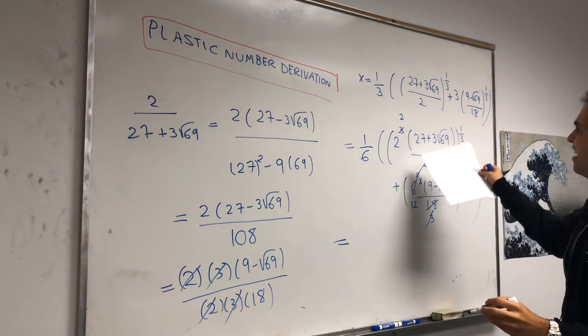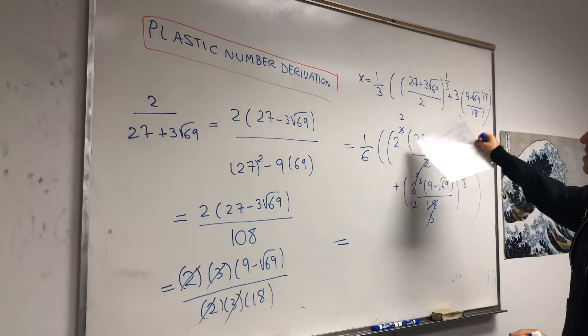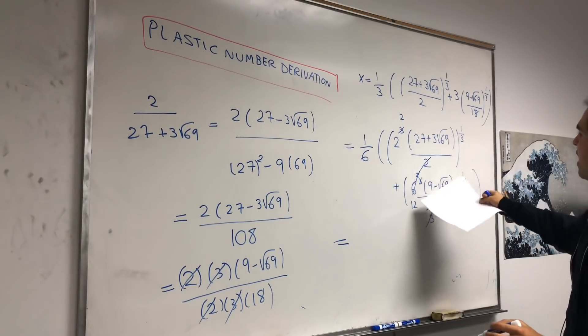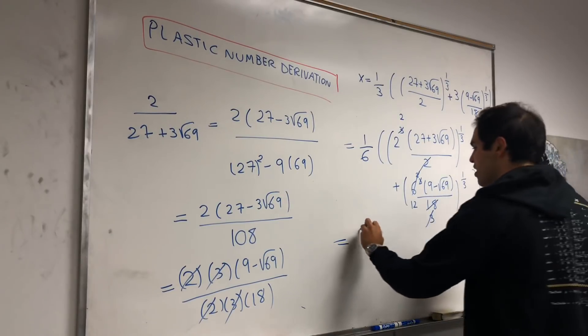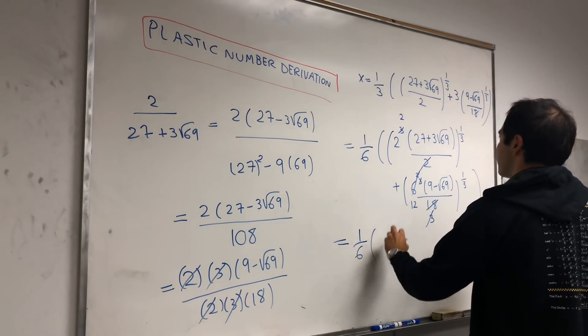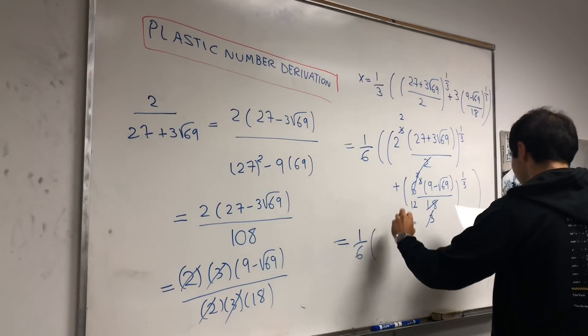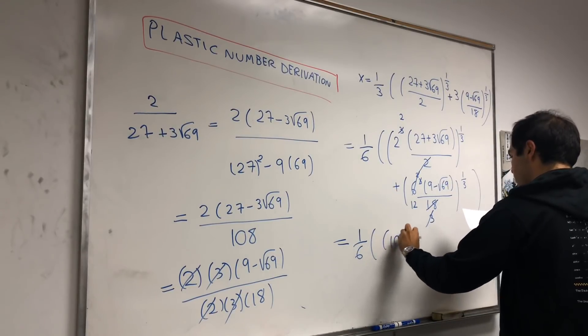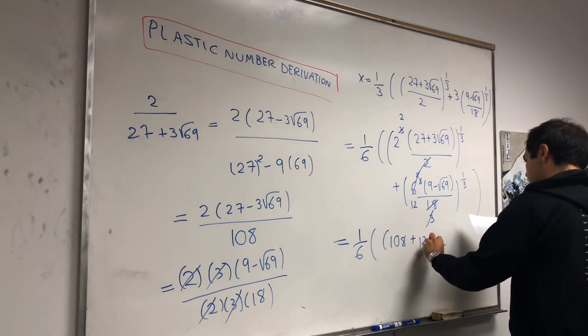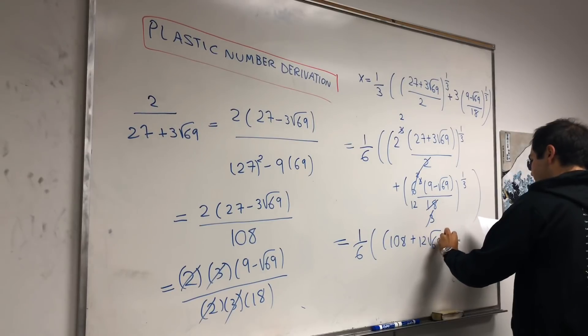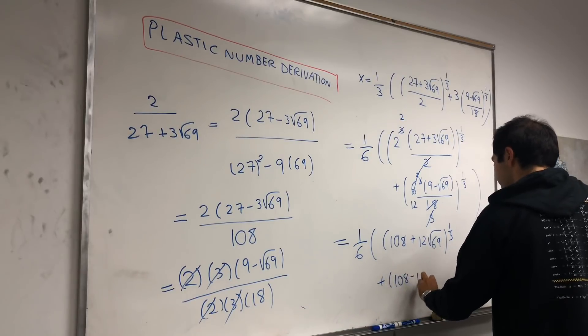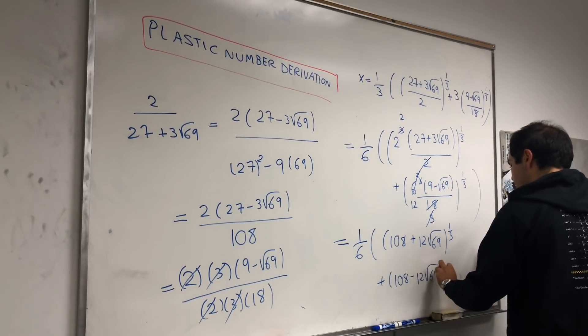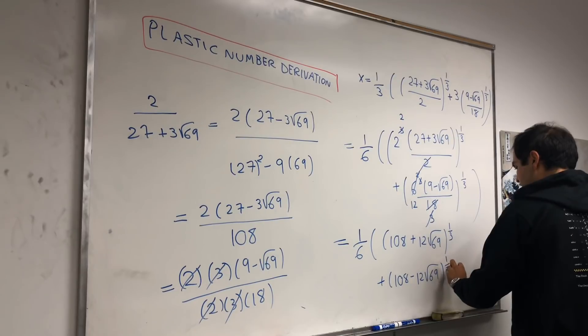So, after the end, in the end, we're left with 1 sixth times 4 times that, cube root, plus 12 times that, cube root, and we're left with 1 sixth times, let's see, 108 plus 12 square root of 69, to the 1 third, plus 108 minus 12 square root of 69, to the 1 third.